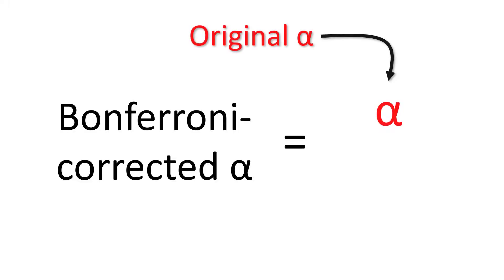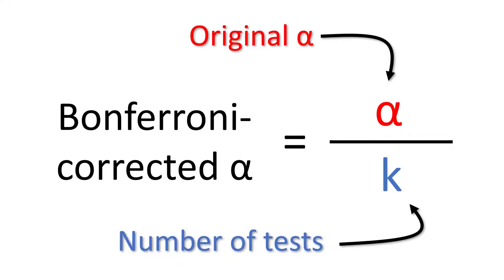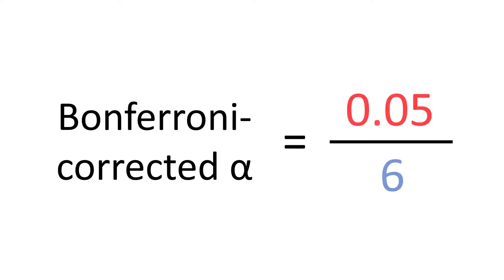You take your original alpha level and you divide it by k. And k is the number of tests being performed. So if we use our previous example of performing 6 tests, this would mean the Bonferroni corrected alpha level is 0.05 divided by 6, which is 0.008 when rounded.